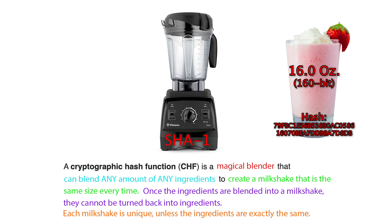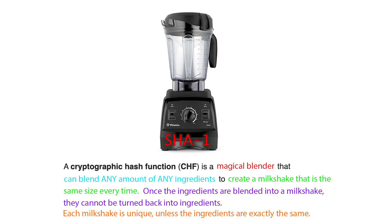With our metaphorical magical blender, each milkshake is going to be unique unless the ingredients you put in were exactly the same. So exact same ingredients will yield the exact same milkshake. But if you change the ingredients even a little bit — even one grain of sugar extra — the milkshake is going to be different. Something about the milkshake's flavor signature is going to change unless the ingredients are exactly the same.